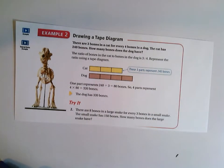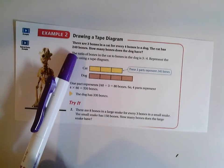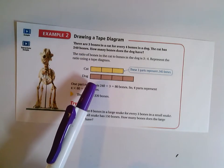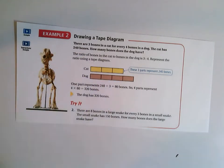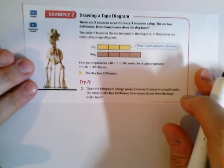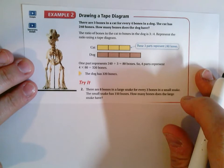The cat has 240 bones. How many bones does the dog have? Okay, so let's take a look at how to draw out this tape diagram and see if we can help solve the problem of how many bones does the dog have.